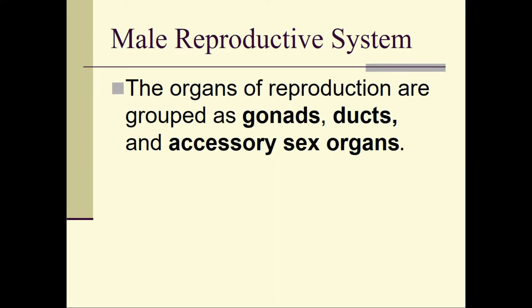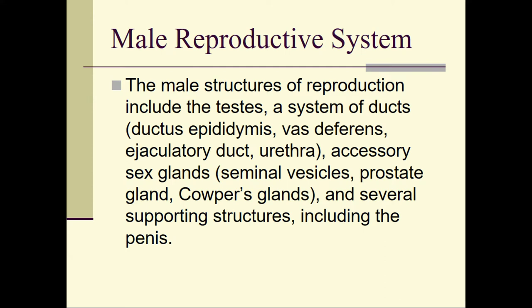The male organs of reproduction — and this also works for the female — are grouped as gonads, ducts, and accessory sex organs. The male structures of reproduction include the testes, also known as the testicles, a system of ducts including the ductus epididymis, the vas deferens, the ejaculatory duct, and the urethra. The accessory sex glands include the seminal vesicles, the prostate gland, and the Cowper's gland, and several supporting structures including the penis.